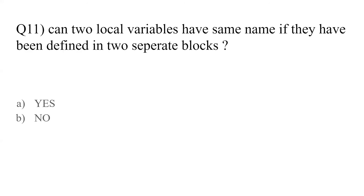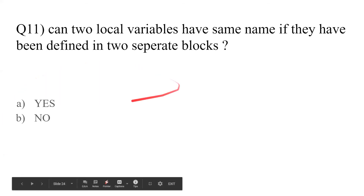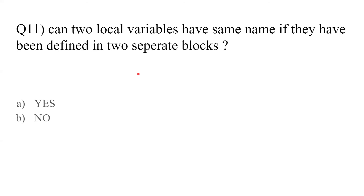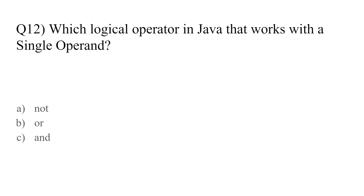Question number eleven: can two local variables have the same name if they have been defined in two separate blocks? We know that as soon as the block ends, the local variable's accessibility dies. So the answer is yes — if we define two local variables with the same name in two separate blocks, it won't give any error and can run properly.